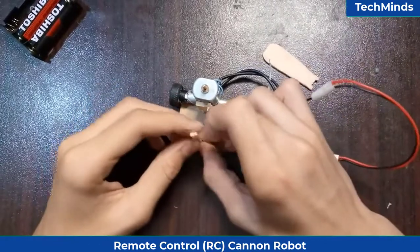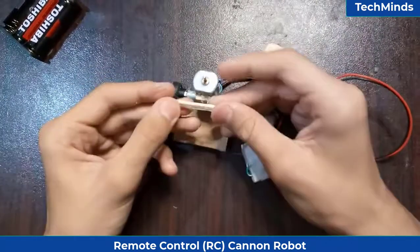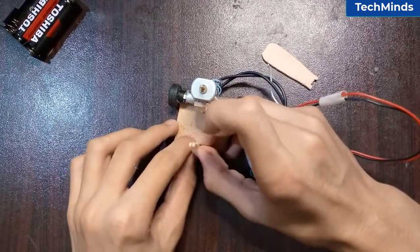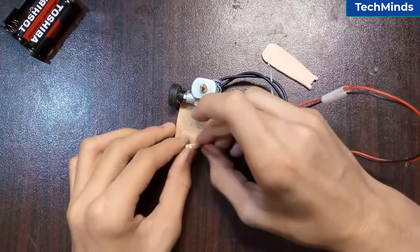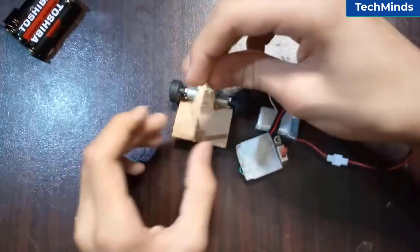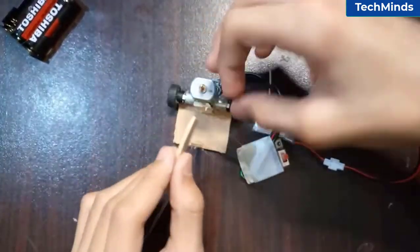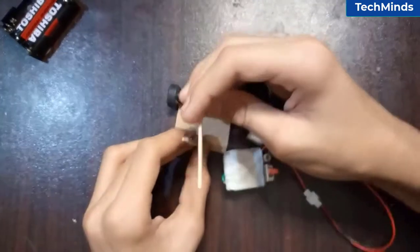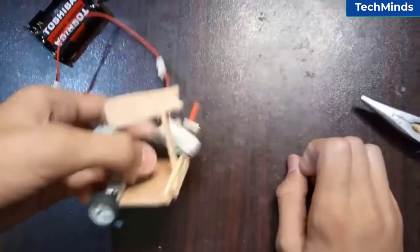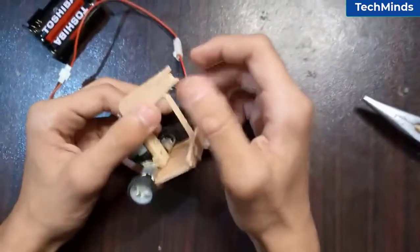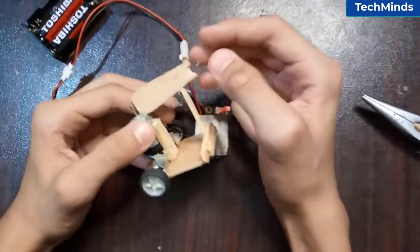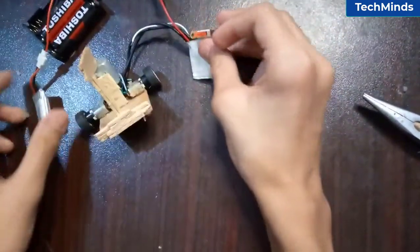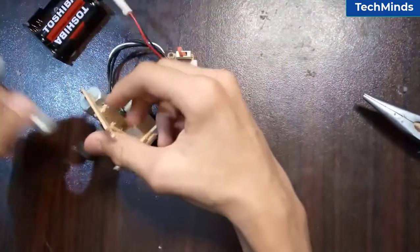Now the stick will go right here. We'll attach it, and then we'll attach the popsicle stick right on top of it. I've attached the popsicle stick on top of the other stick. The battery will go right here, and then the RC will slide right in. Let's test how it works currently.